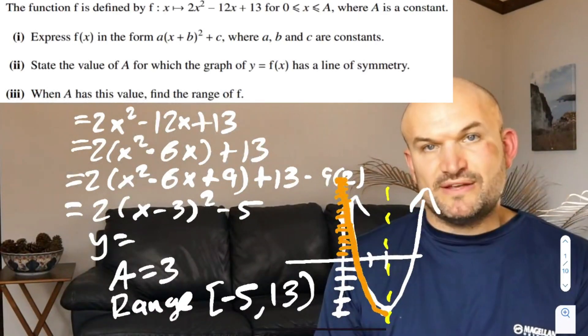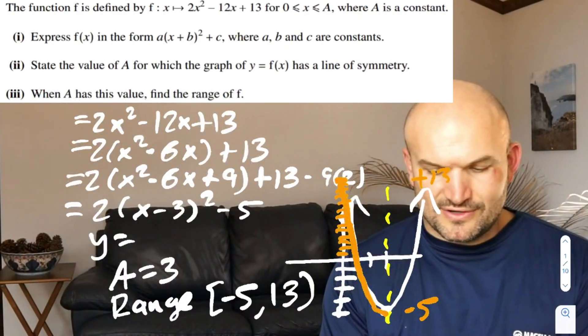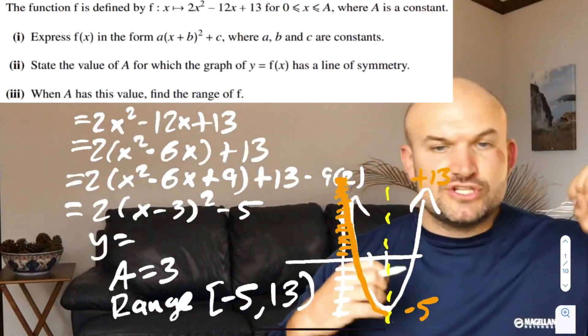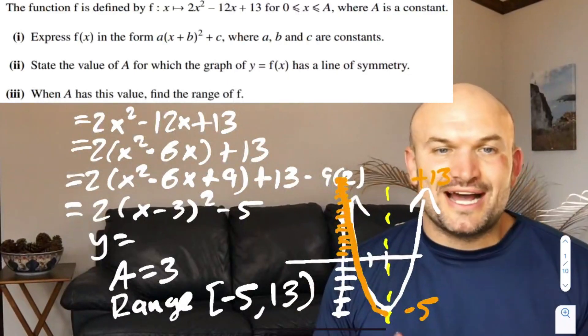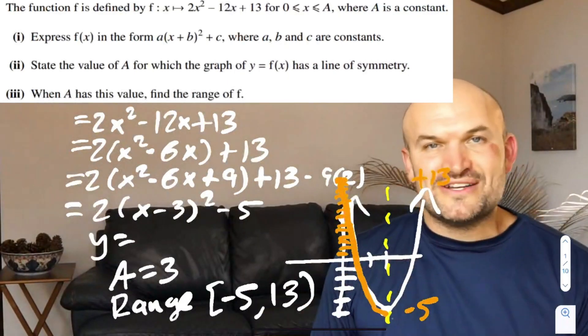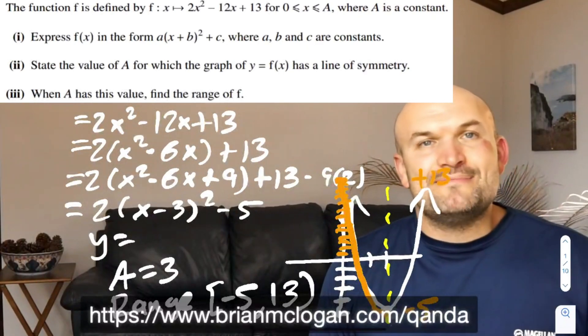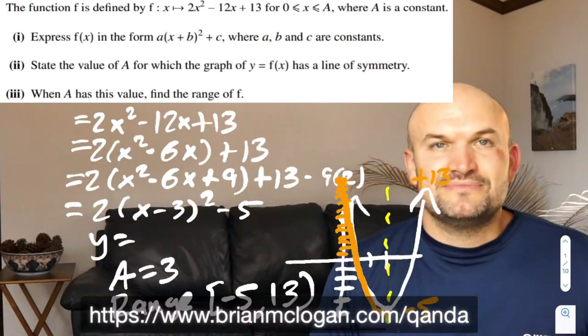From negative five up to 13, negative five to positive 13, that's going to be the range of the graph from zero to three. So there you go, ladies and gentlemen, that is how I would answer that question. Go ahead and visit my link at BrianMcLogan.com/qanda, and hopefully I can make a video just like this for your question or answer it on my live stream. I'll see you soon. Cheers.